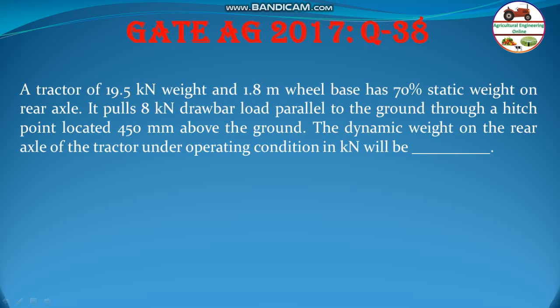A tractor of 19.5 kilo Newton weight and 1.8 meter wheel base has 70 percent static weight on rear axle. It pulls 8 kilo Newton drawbar load parallel to the ground through a hitch point located 450 millimeter above the ground.